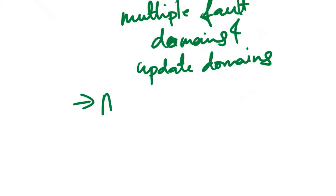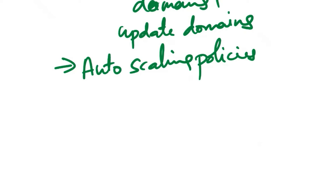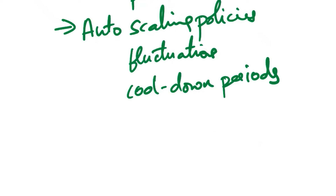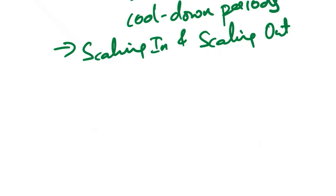The next consideration is auto-scaling policies. Set up auto-scaling policies to handle fluctuations in demand. Define rules based on metrics such as CPU utilization or other custom metrics relevant to your application. Specify minimum and maximum instance counts to control scale-out and scale-in behavior. Configure cool-down periods to prevent rapid scaling actions that might lead to instability. When demand increases, the auto-scaling policies should trigger the addition of new instances (scaling out). When demand decreases, the policies should scale in by removing instances that are no longer needed.